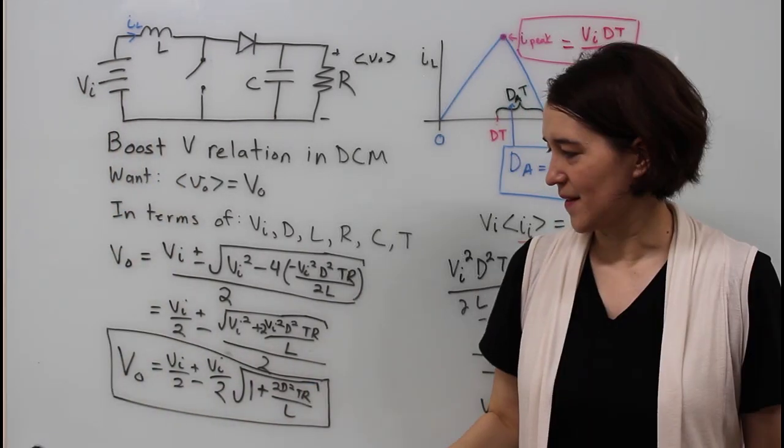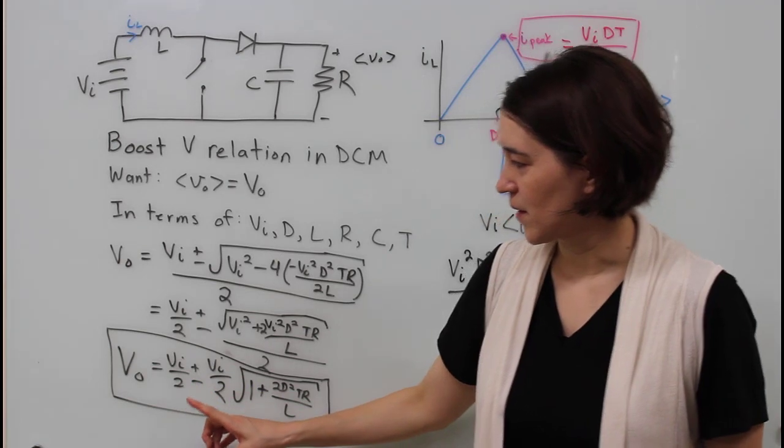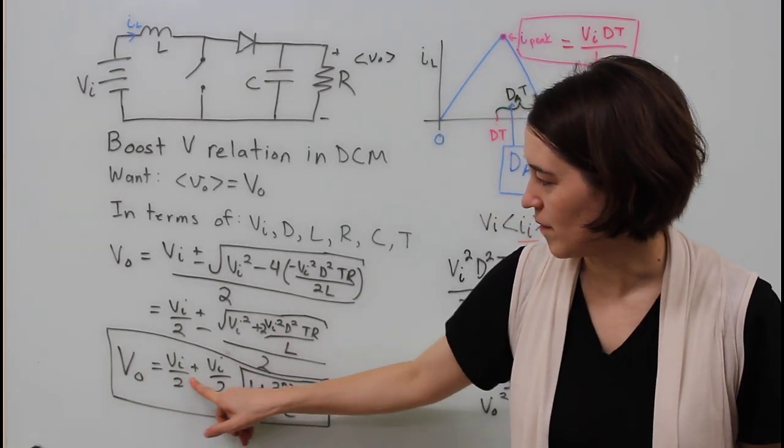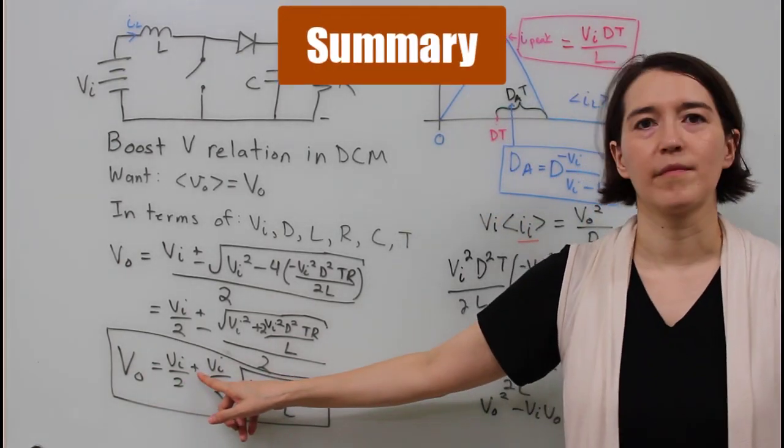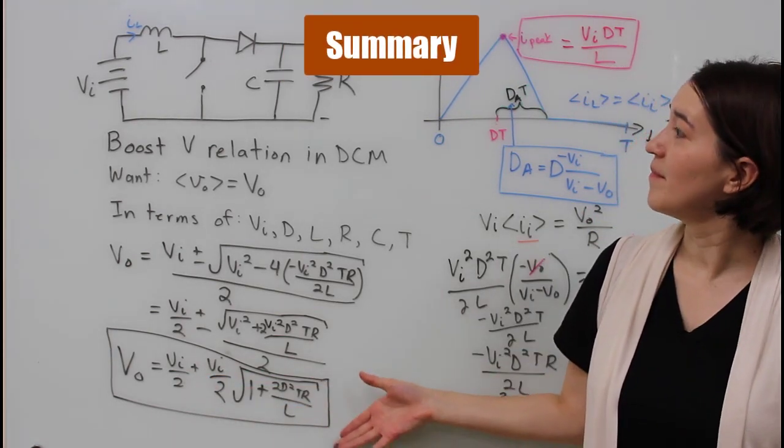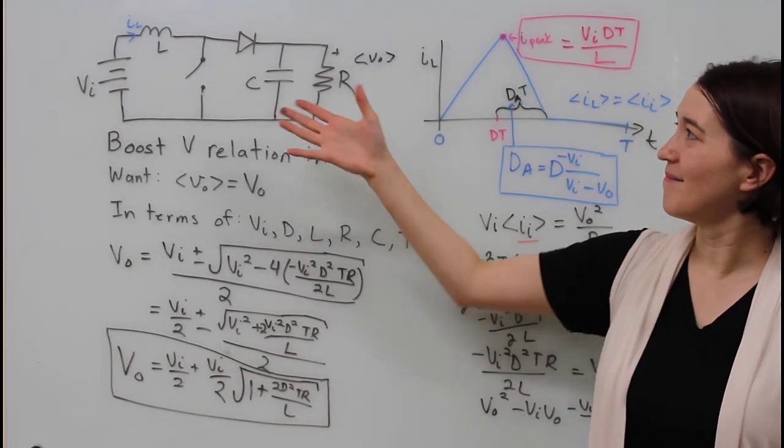But we have two values, a positive and a negative, but we know the negative doesn't make sense so we just keep the positive value. So here is the output voltage for a boost converter operating in DCM with a resistive load.